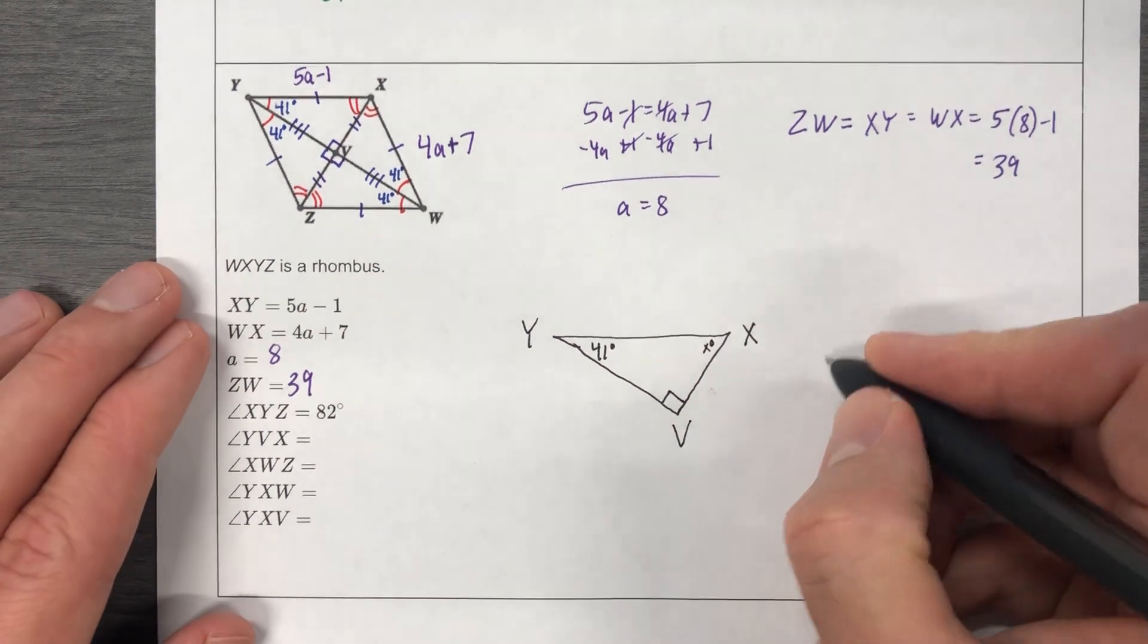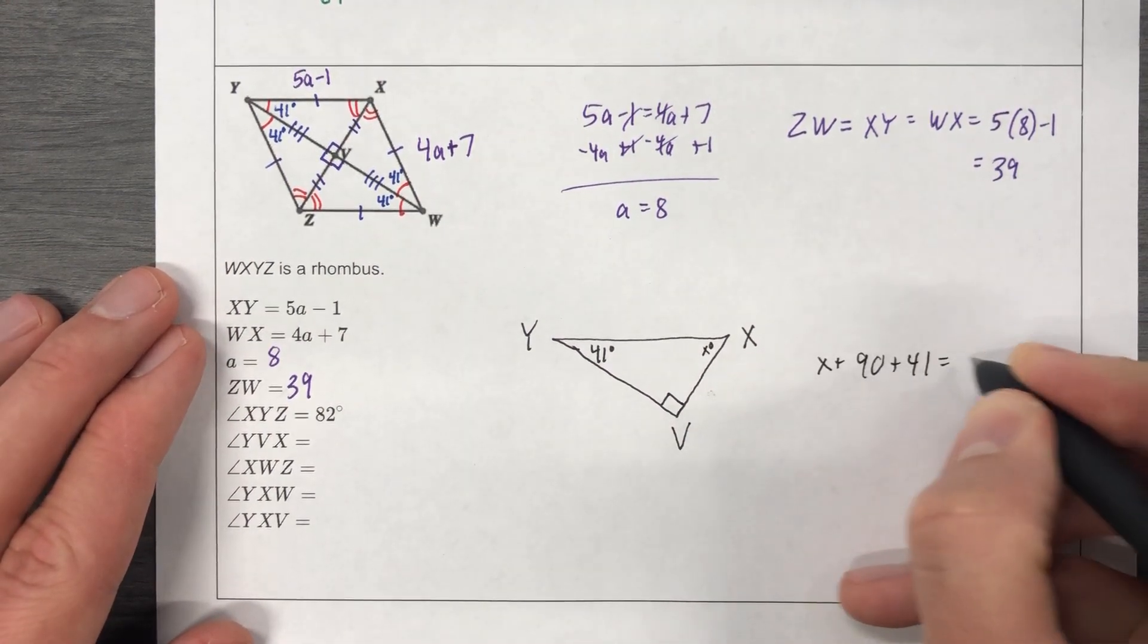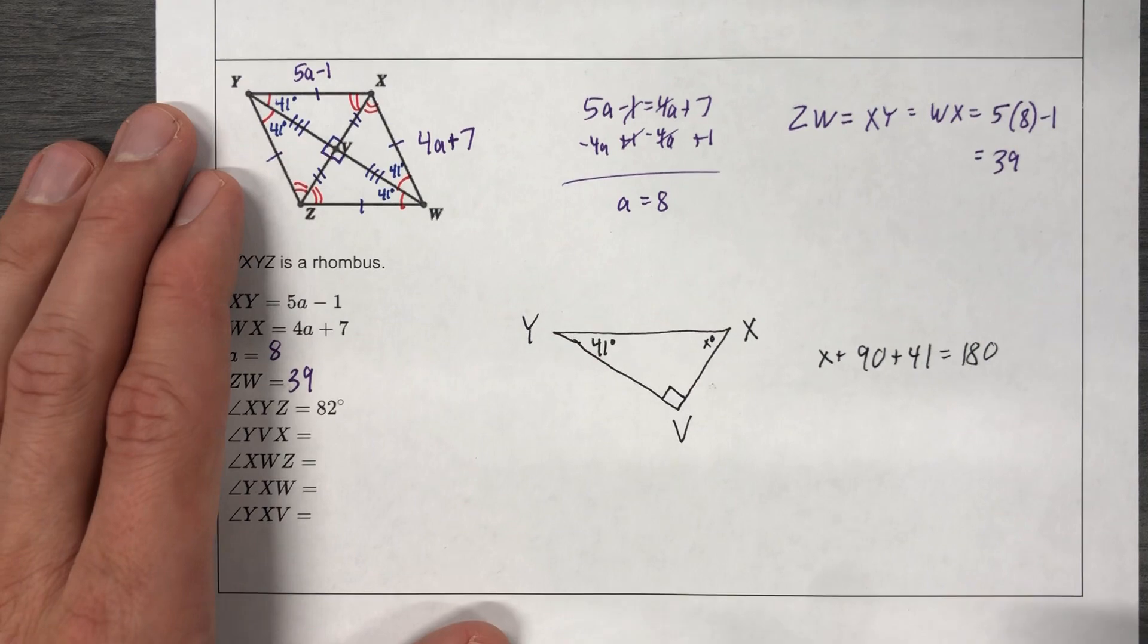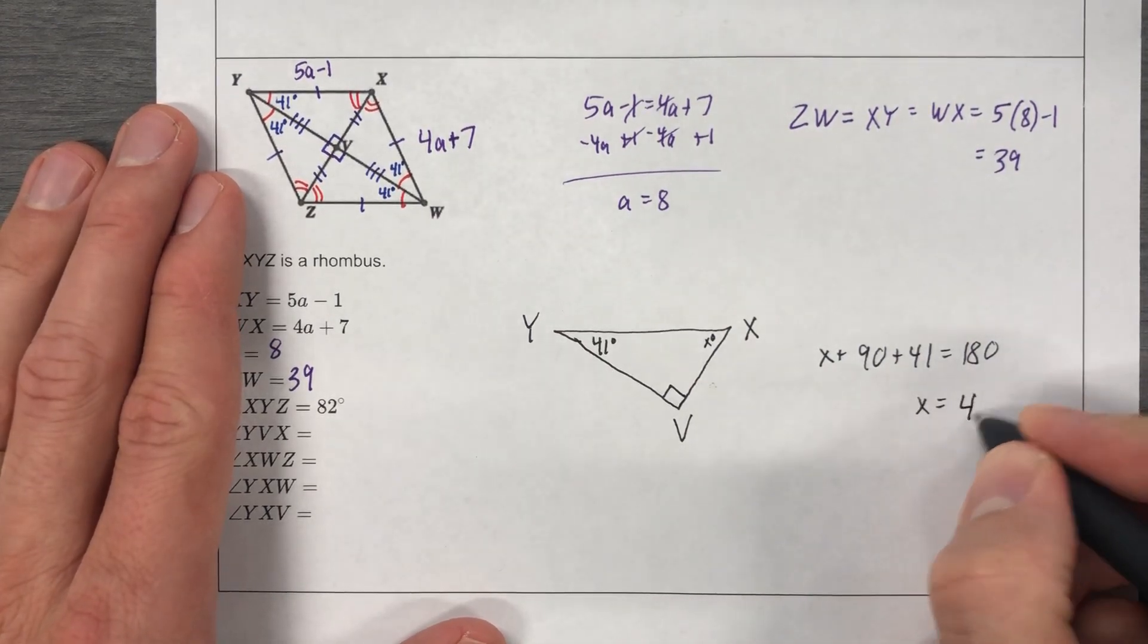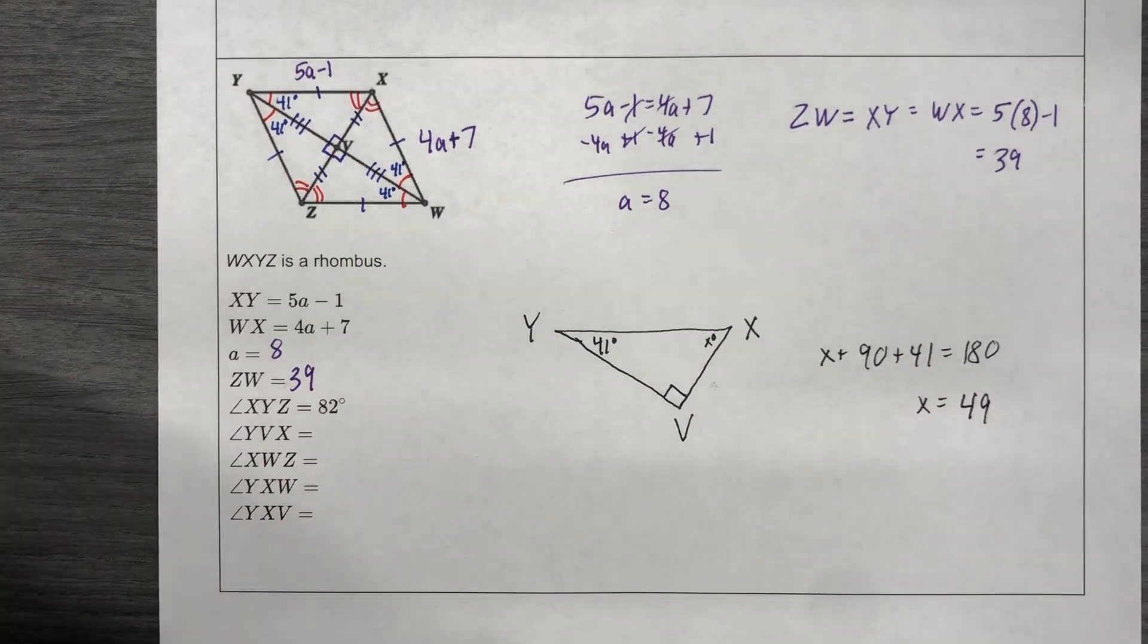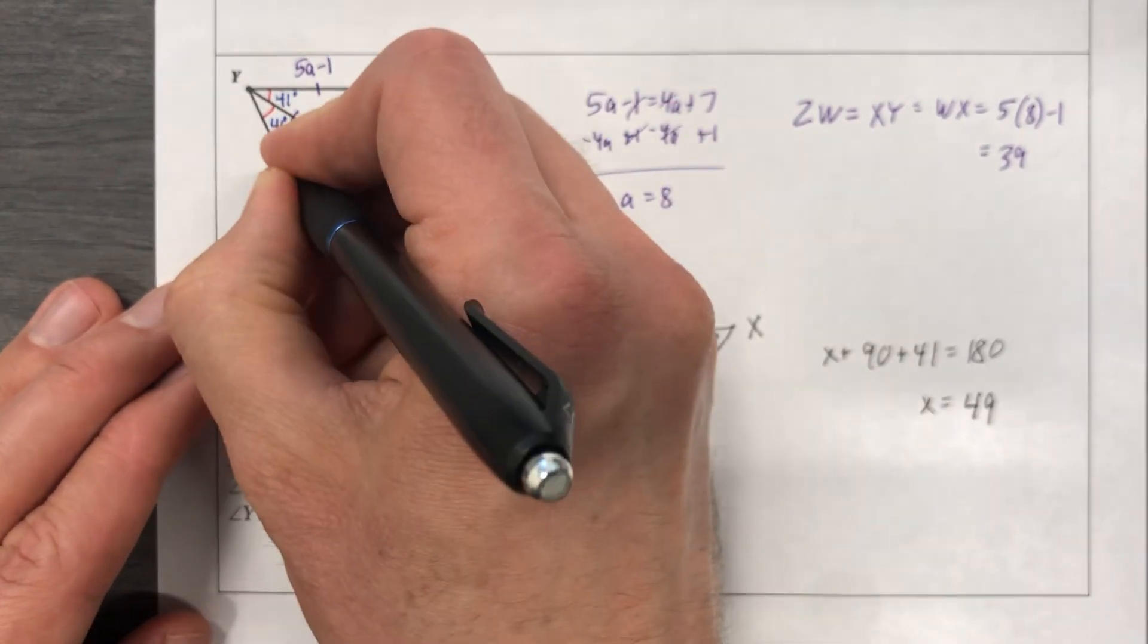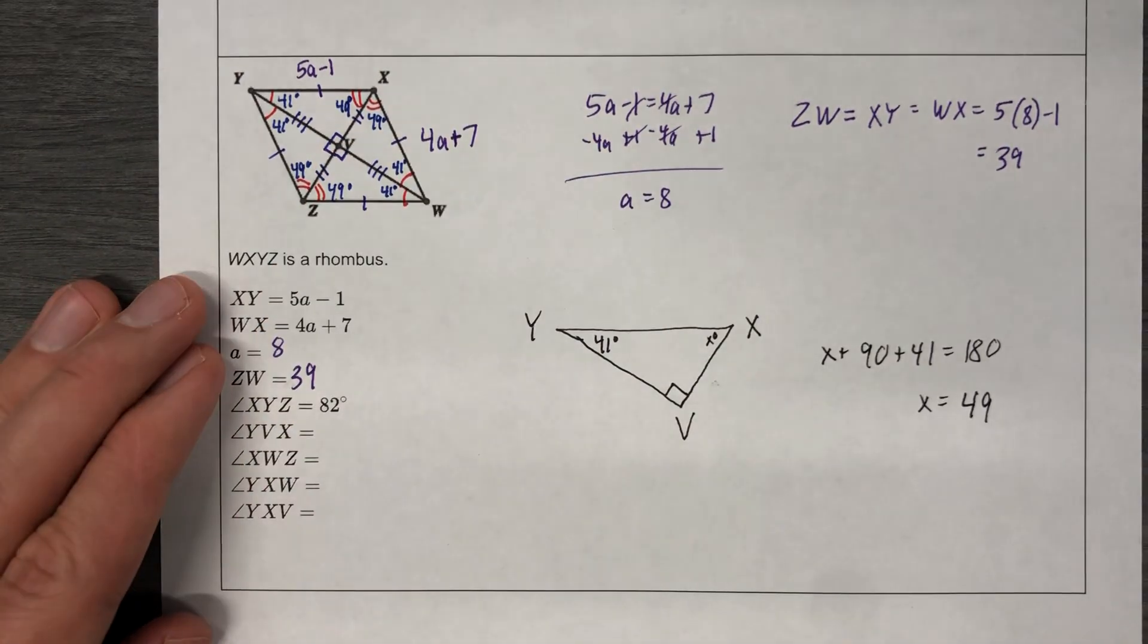So X plus 90 plus 41 is equal to 180, because we're dealing with a triangle, which has a sum of 180 degrees on the interior, and that's going to give me 49. So this angle right here is 49. Let's put it. 49, 49, 49, 49, 49. Now let's answer some questions.